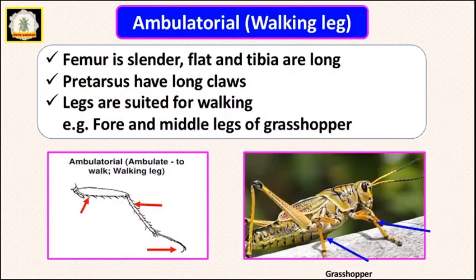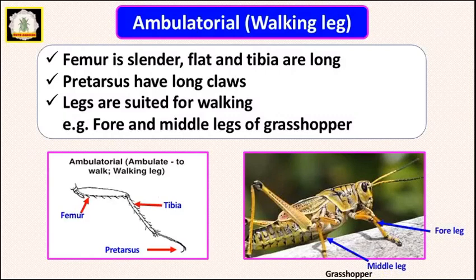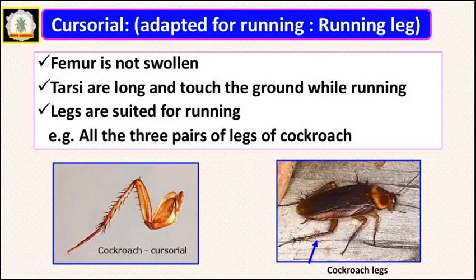The first modification is ambulatorial legs, which are used for walking purpose. In this type, the femur is slender and flat, and the tibia is long, whereas the pretarsus has long claws. These claws provide grip while walking. This type of leg is found in grasshoppers — specifically the fore and middle legs are suited for walking purpose.